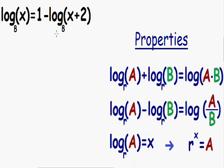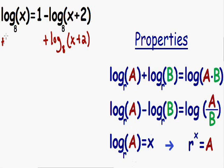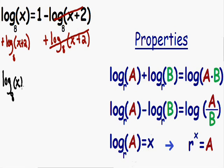So I'm going to bring this minus log base 8 of (x + 2) over to the left hand side so all my log terms are on the left and everything else is on the right. Since there's a negative sign in front of this log term, I'm going to add the log base 8 of (x + 2) to both sides. Now notice on the right hand side the negative log of (x + 2) and the positive log of (x + 2) cancel out, and on the left hand side we still have the log base 8 of x, and we just added the log base 8 of (x + 2).